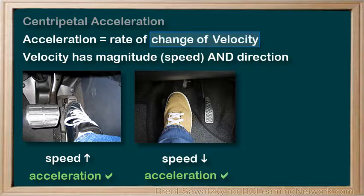So to change an object's velocity, we have to change either its magnitude or its direction. In our previous examples, we've been changing the magnitude of the velocity, that is, the object's speed.